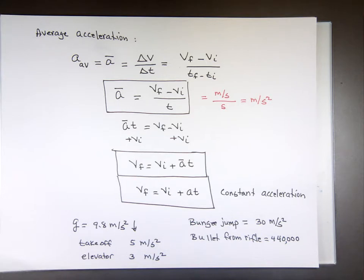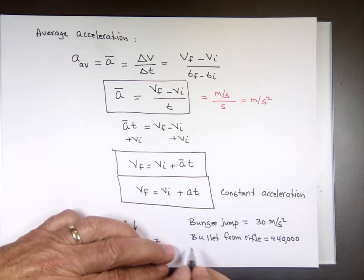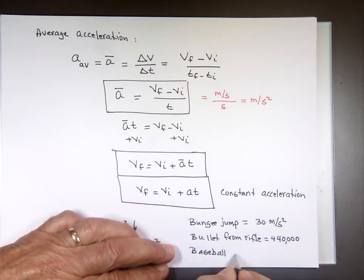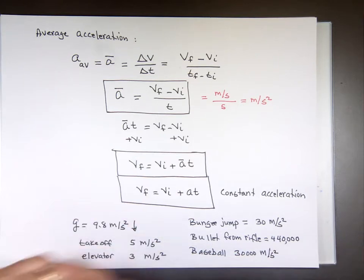Baseball — when somebody hits a home run, like Mookie Betts or J.D. Martinez — the acceleration of a batted baseball is 30,000 meters per second squared.